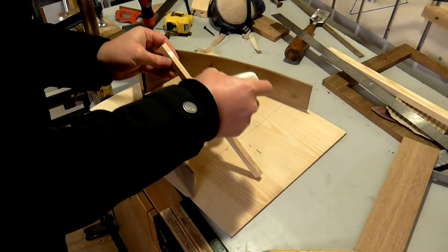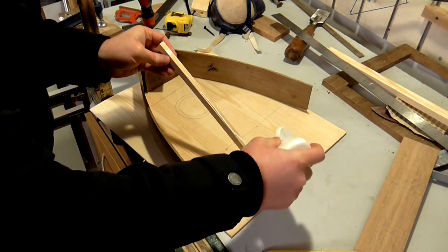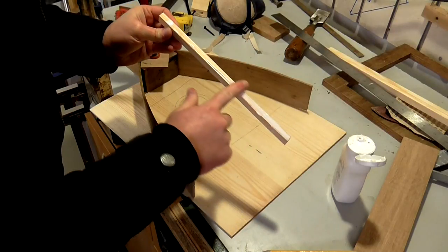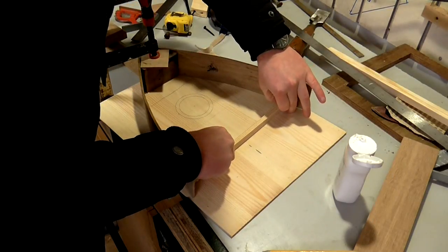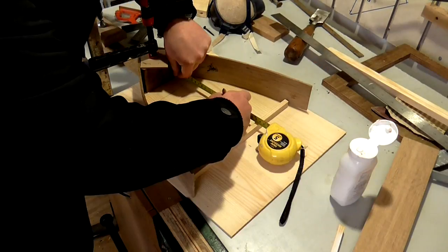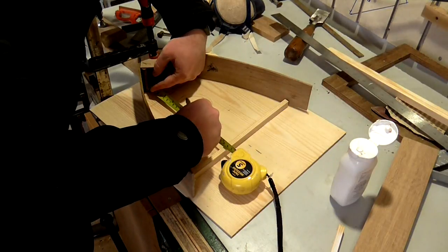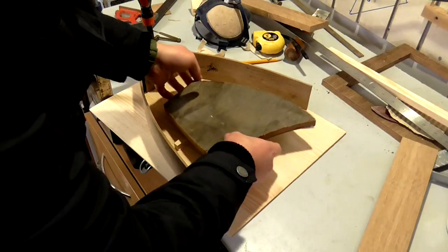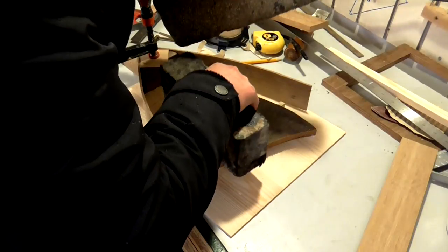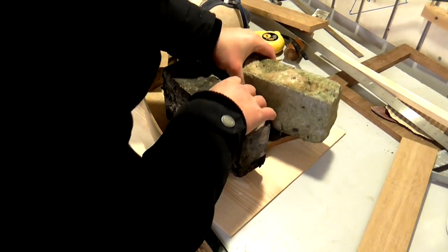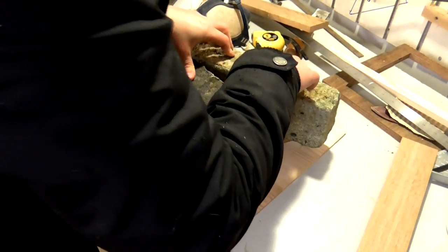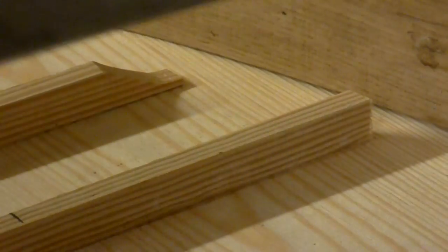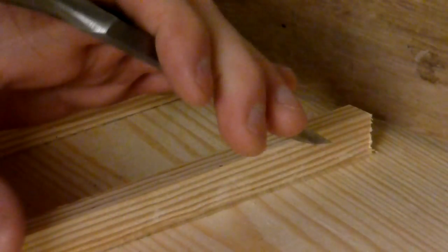These were glued to the inside of the soundboard and weighed down with a couple of bricks to get a tight joint. When the glue had dried I then shaped the end of each rib with a chisel.